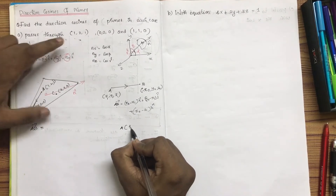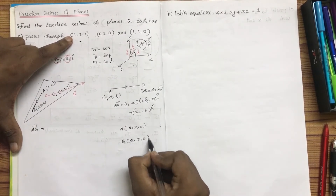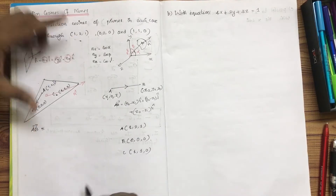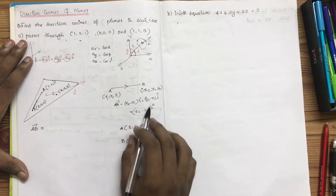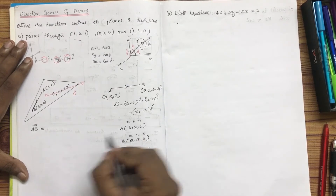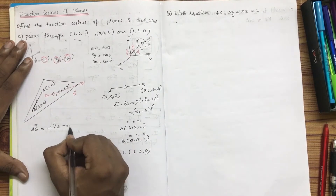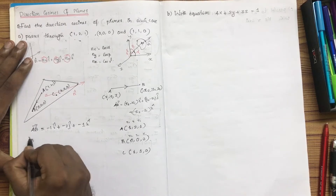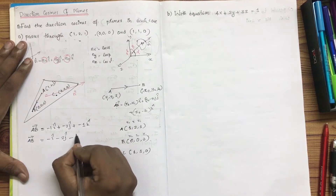Point A has coordinates 1, 2, 1. Point B has coordinates 0, 0, 0. Point C has coordinates 1, 1, 0. So if you have vector a-b, this is x2 minus x1. This is my vector equation. x2 minus x1 gives minus 1 into i, plus y2 minus y1 gives minus 2 into j, plus z2 minus z1 gives minus 1 into k.